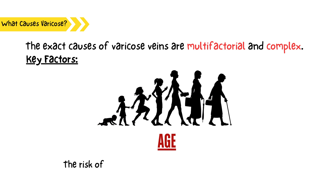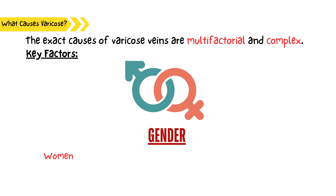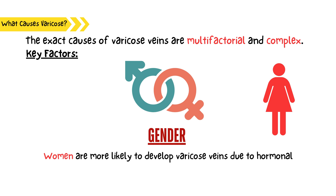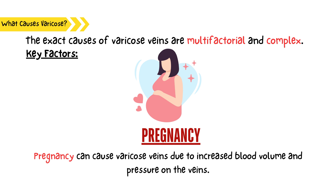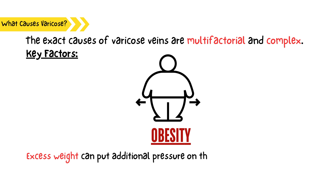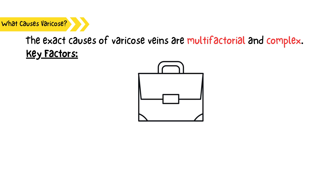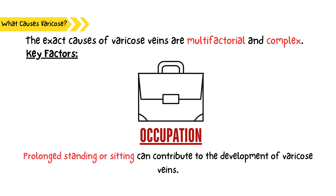Age: the risk of developing varicose veins increases with age, particularly after the age of 40. Gender: women are more likely to develop varicose veins due to hormonal fluctuations during pregnancy and menopause. Pregnancy can cause varicose veins due to increased blood volume and pressure on the veins. Obesity and excess weight can put additional pressure on the veins. Occupation: prolonged standing or sitting can also contribute to the development of varicose veins.